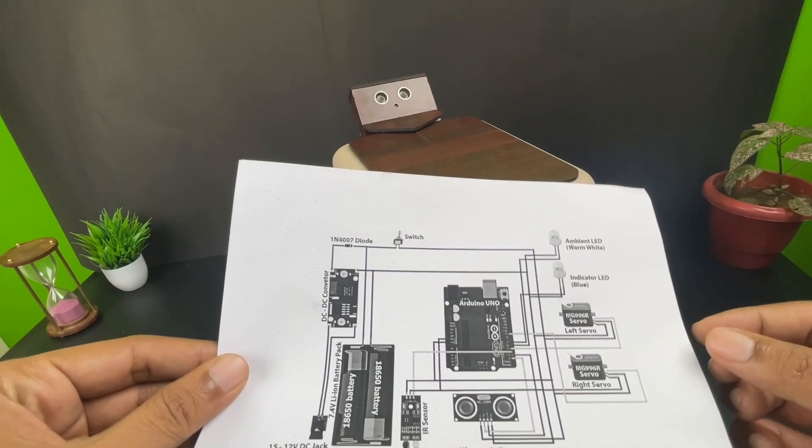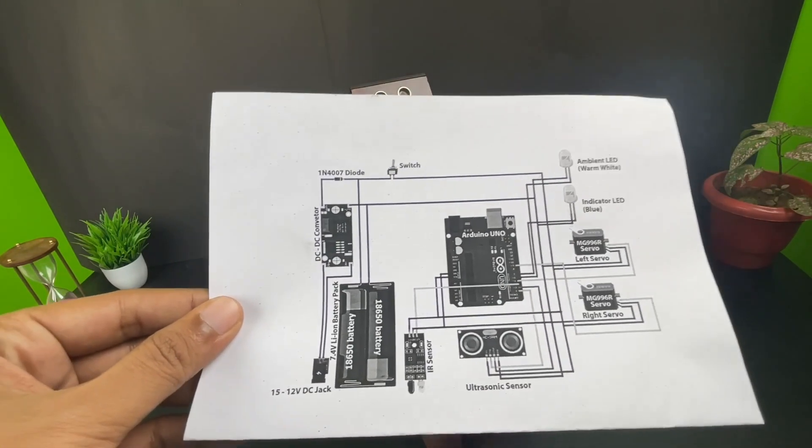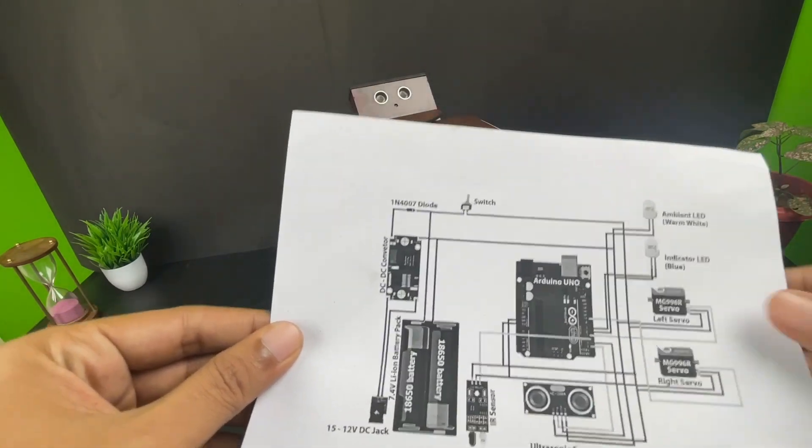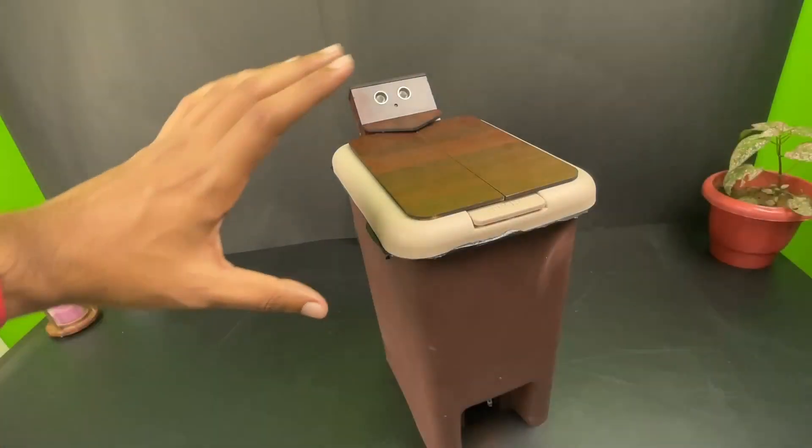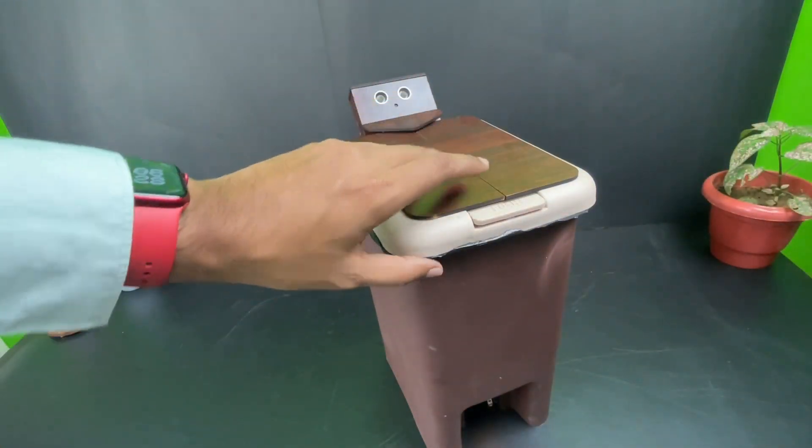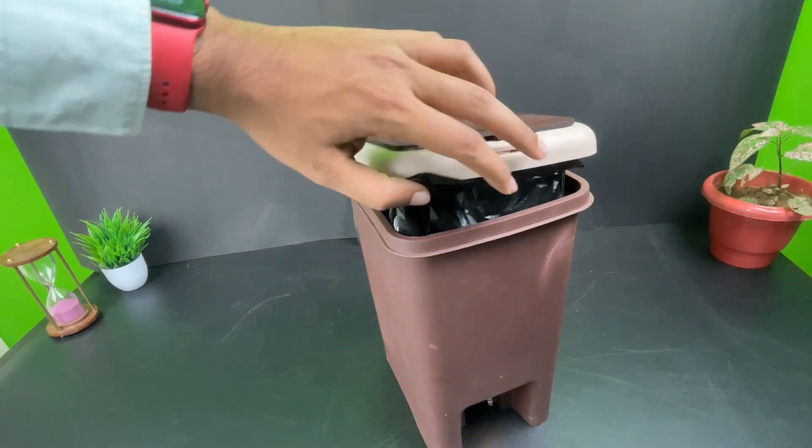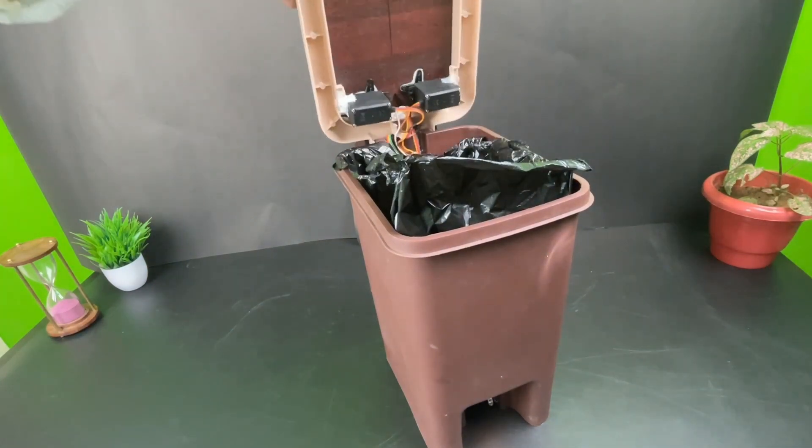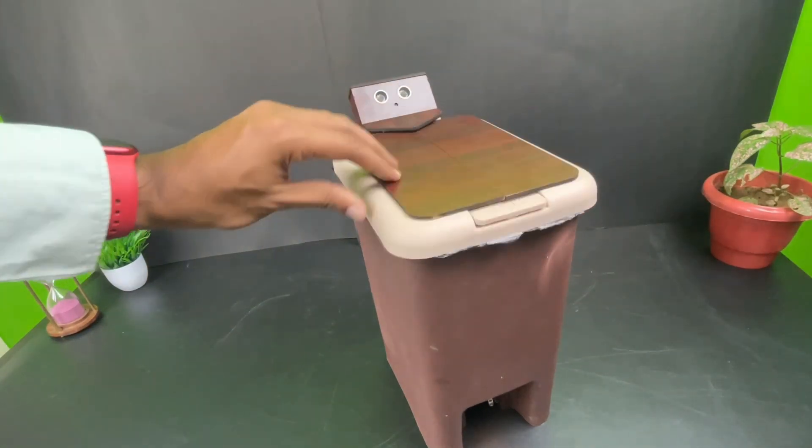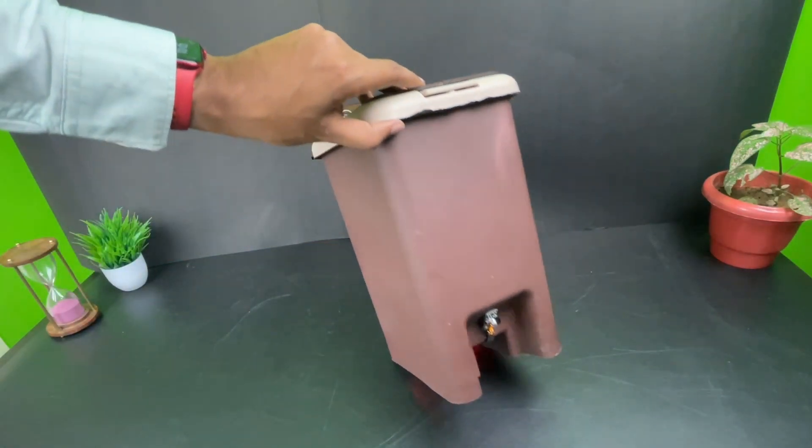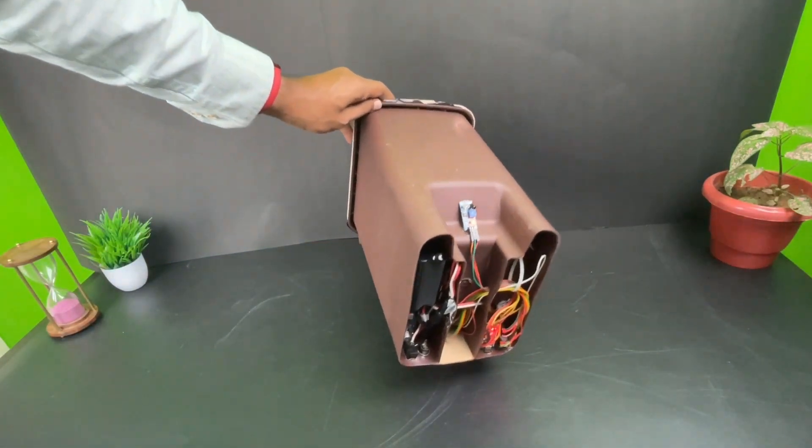In the circuit diagram we have shown an Arduino UNO, but actually we have used an Arduino Nano. Let me just show you where all the circuitry is present on this dustbin. We have not kept anything inside the dustbin because we want it practical, and so we have utilized the complete space at the bottom of the dustbin.